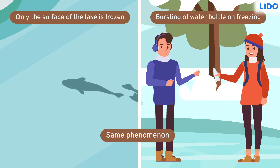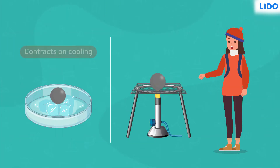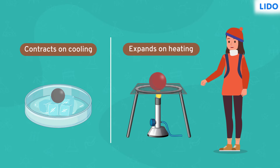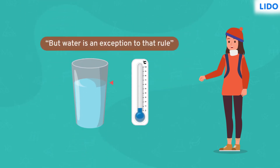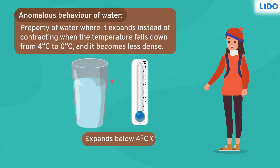Isn't it amazing? You know that objects contract on cooling and expand on heating, right? Priya continued. But water is an exception to that rule. When water freezes below 4 degrees Celsius, it expands. This is an anomaly, also called the anomalous behavior of water.